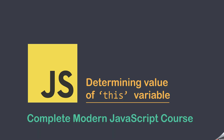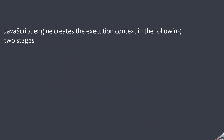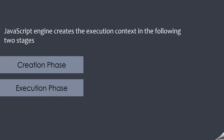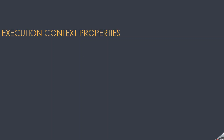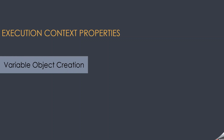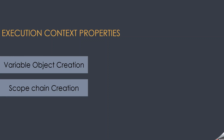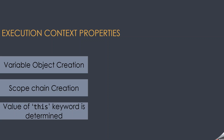In this lecture, we are going to talk about the third and last step of the creation phase of an execution context. The last step of the creation phase is determining the value of the this variable. From our previous lectures, we know that the JavaScript engine creates the execution context in two phases: the creation phase and the execution phase. In the creation phase, the properties of the execution context object are created — first the variable object, then the scope chain, and finally the value of the this keyword is determined.